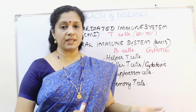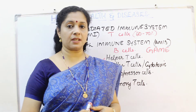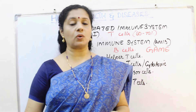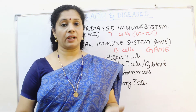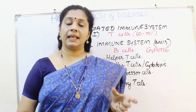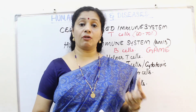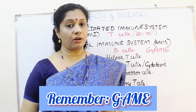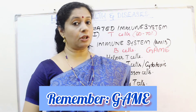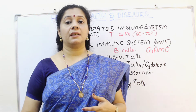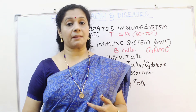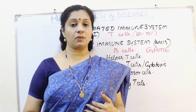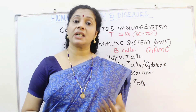The immune system can also function against transplanted organs. Whenever a tissue or organ is transplanted, it is called a graft. Three criteria must be followed before transplanting any organ: matching of the blood group, matching of the tissue, and administering immunosuppressant agents — medicines to suppress our immune system so that it does not reject the graft.